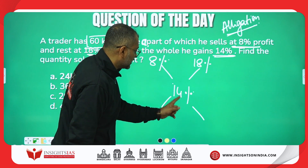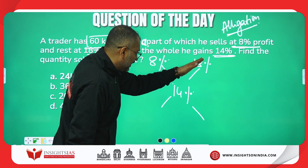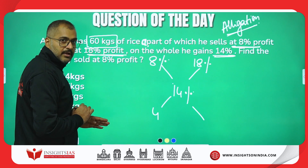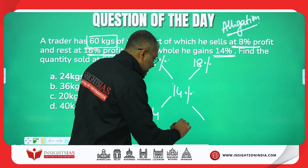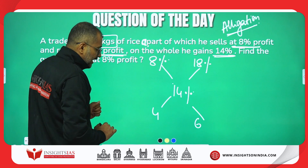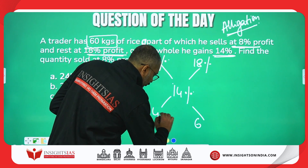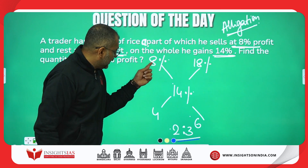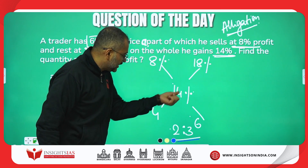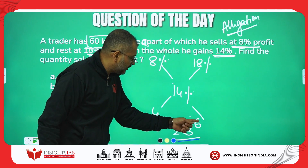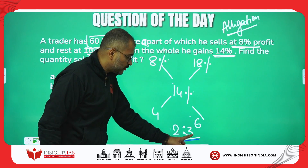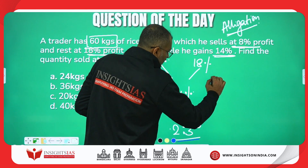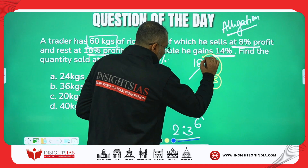You need three data points to apply allegation: 8%, 18%, and the resultant 14%. After writing this, take the difference: 18 minus 14 is 4, and 14 minus 8 is 6. So he is selling them in the ratio 4:6, which is nothing but 2:3. Write 8% and 18% with 14% in the middle — difference of these two is 4, difference of these two is 6, giving ratio 2:3. Two parts he is selling at 8% profit and three parts at 18% profit.